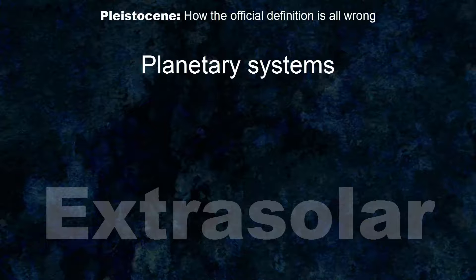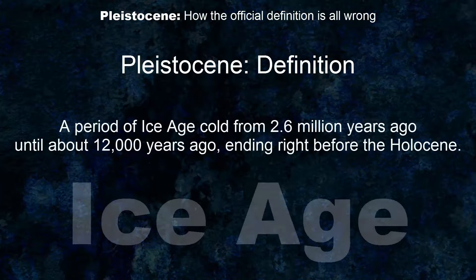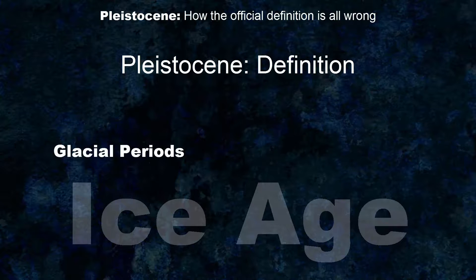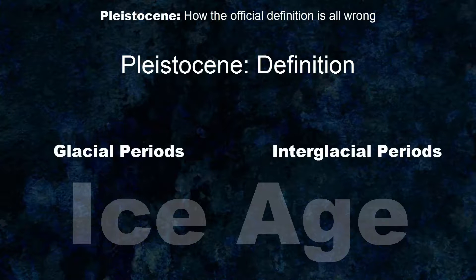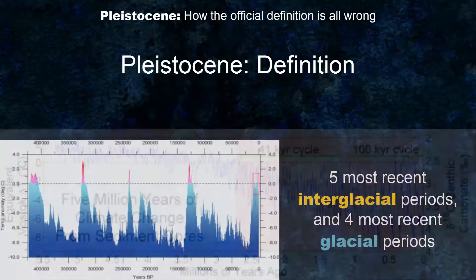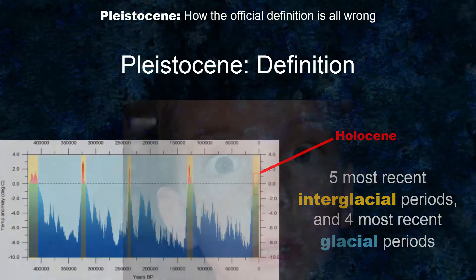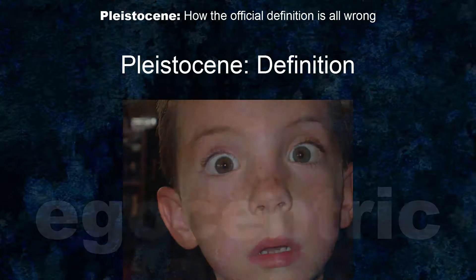But using the wrong term or an incorrect definition creates confusion. The definition of Pleistocene: according to the current definition, the Pleistocene epoch is an ice age with a couple of dozen glacial periods and a couple of dozen interglacial periods, all including a stretch of time approximately 2.6 million years long. Ironically, the Holocene epoch is one of a series of two dozen interglacials. The only thing that makes it different or special is that we currently live in it.